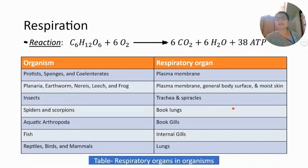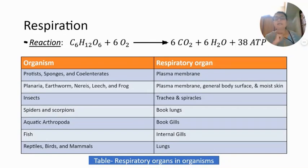In case of flowering terrestrial plants, the stomata is the respiratory organ. In case of woody plants, particularly trees and shrubs, lenticels are used as the respiratory organ. In case of animals, there is a wide variety of respiratory organs.